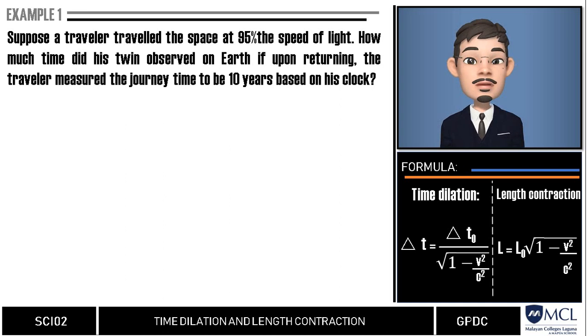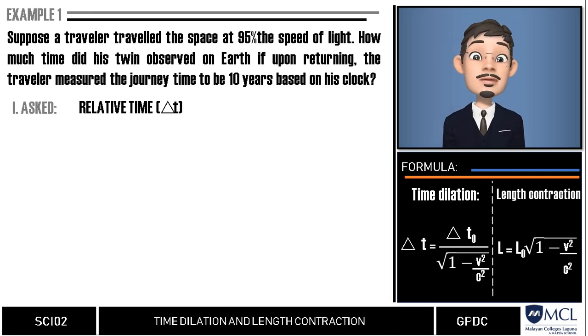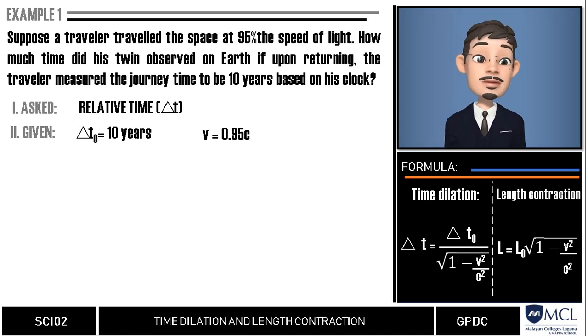As always, the first thing we need to do is to identify what is asked. Here, we are looking for the relative time observed by the traveler's twin on Earth. Next, the given in the problem are the proper time, which is 10 years, and the speed of the traveler measured at 95% the speed of light, or simply 0.95c.